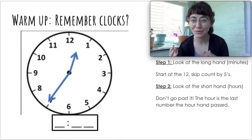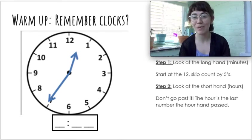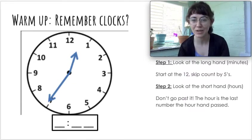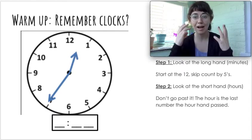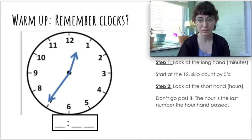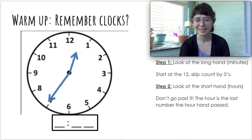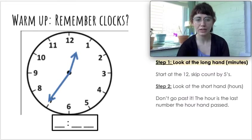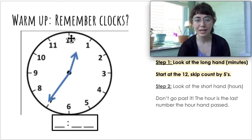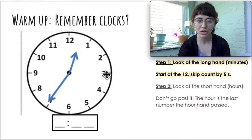This warm up is all about clocks. Do you remember how to tell time on a clock? We're going to do this problem together and then you're going to do one on your own. Step one is we always look at the long hand, which is the minutes hand. We start at the 12 and skip count by five. I want you to write down how many minutes you think the clock is telling you. I look at the long hand and it's pointing all the way down here at the seven. So I start up at the 12 and skip count by fives all the way around.